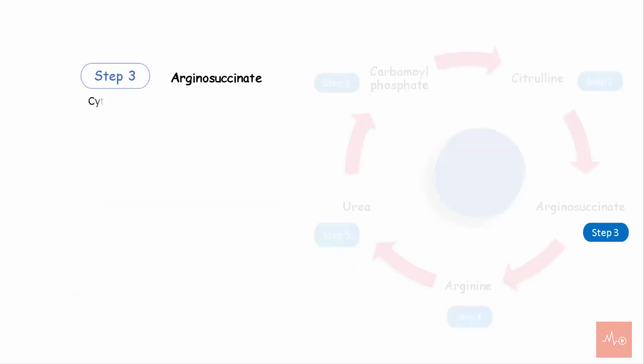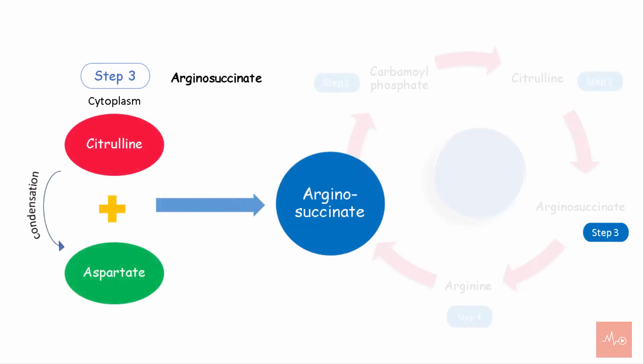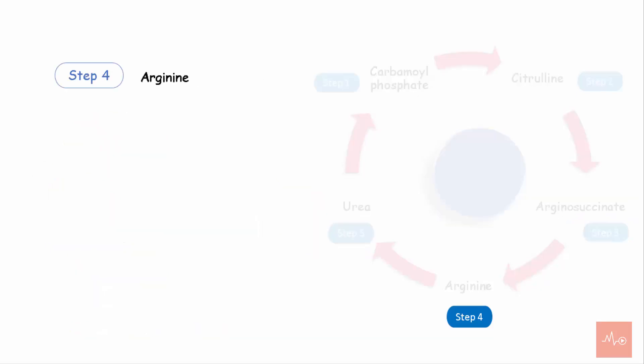Step 3 is the synthesis of arginosuccinate. Citrulline condenses with aspartate to form arginosuccinate in the presence of enzyme arginosuccinate synthetase. This is where urea gets the second amino group from - that is, aspartate. This step utilizes ATP molecules.